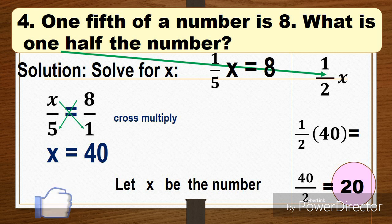X times one is x. Eight times five is 40. Therefore, the value of x is equal to 40. The value of the number is 40. And then the question is, what is one half the number?